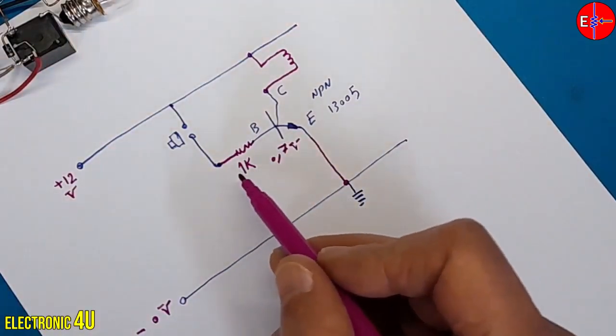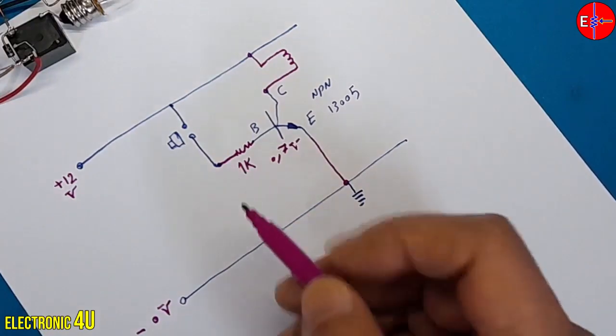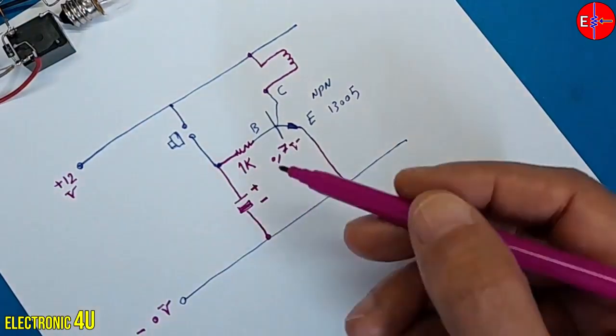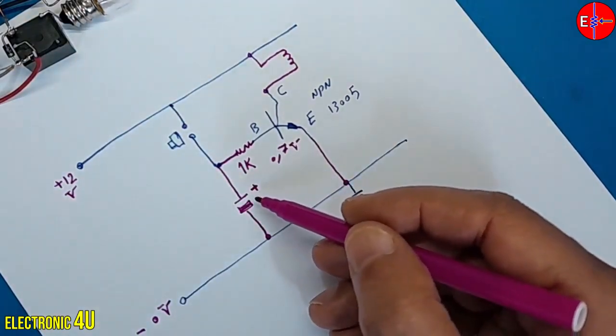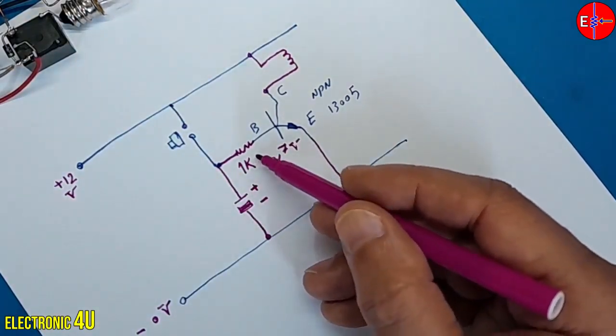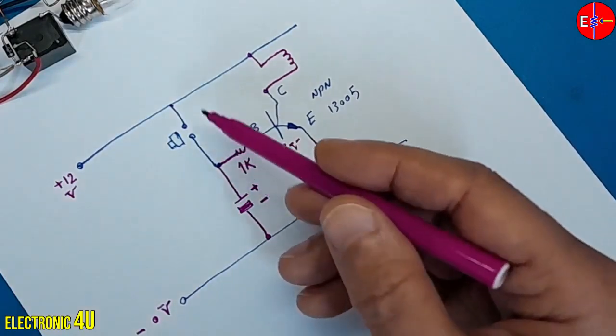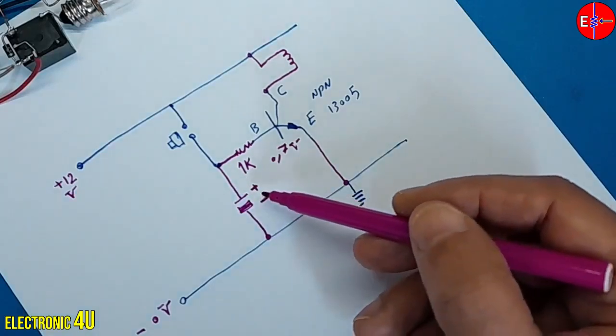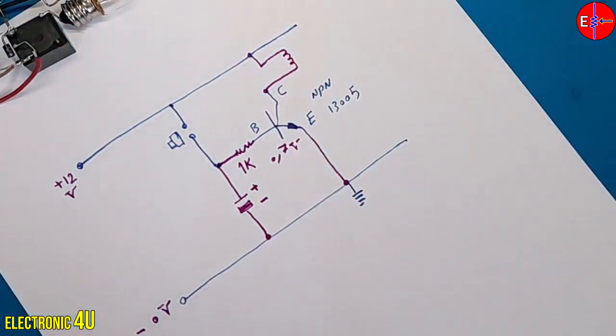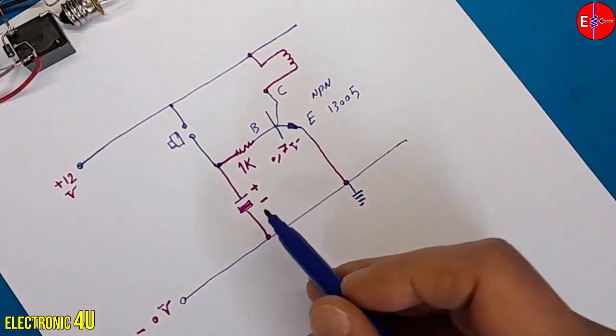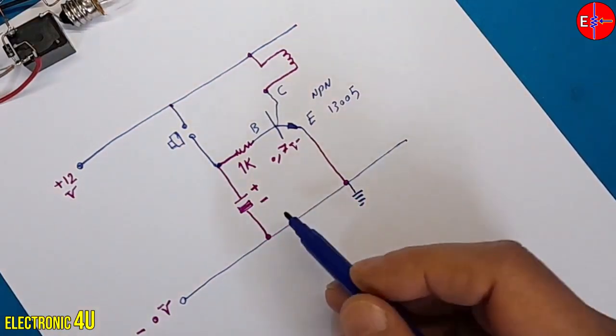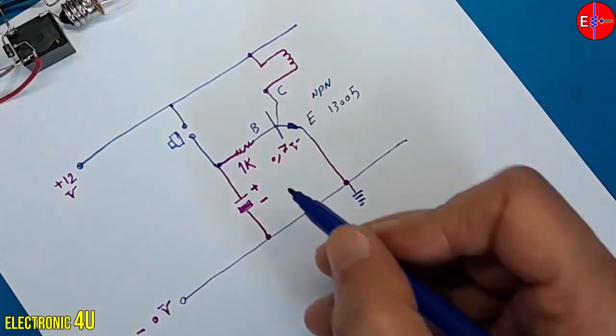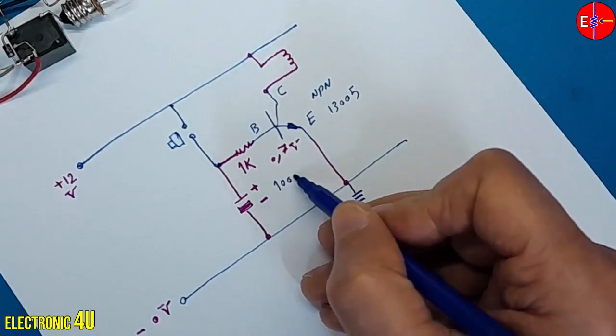I place the capacitor on the base pin before the resistor. I connect the positive side of the capacitor to the 1 kilo ohm resistor. The resistor is directly connected to the positive line, and the negative side of the capacitor is connected to ground. The higher the capacitance of the capacitor, the longer the relay stays active. In this example, I consider a 1000 µF capacitor.